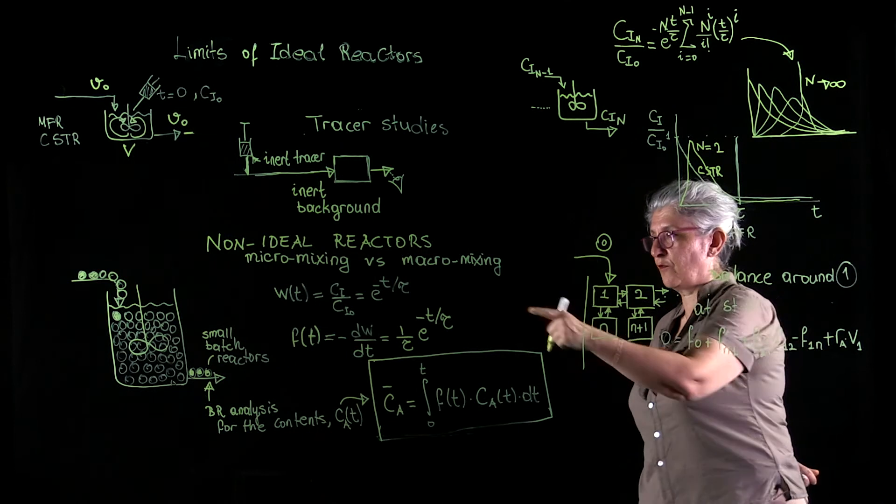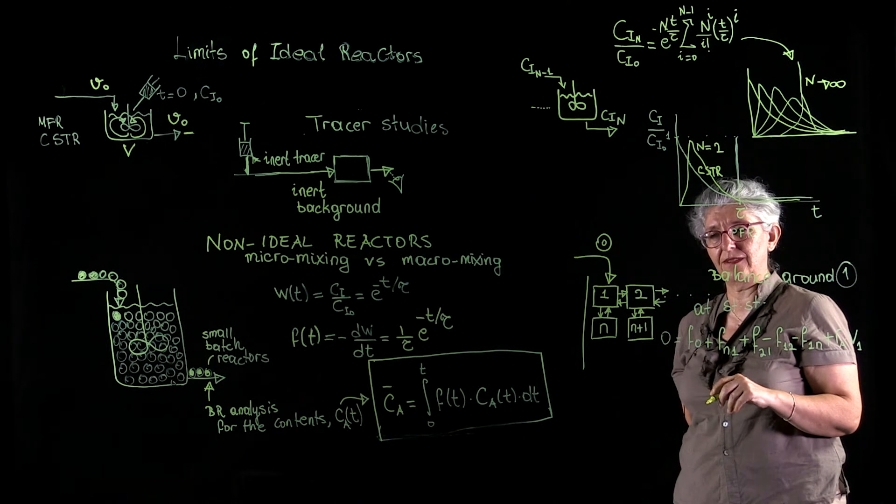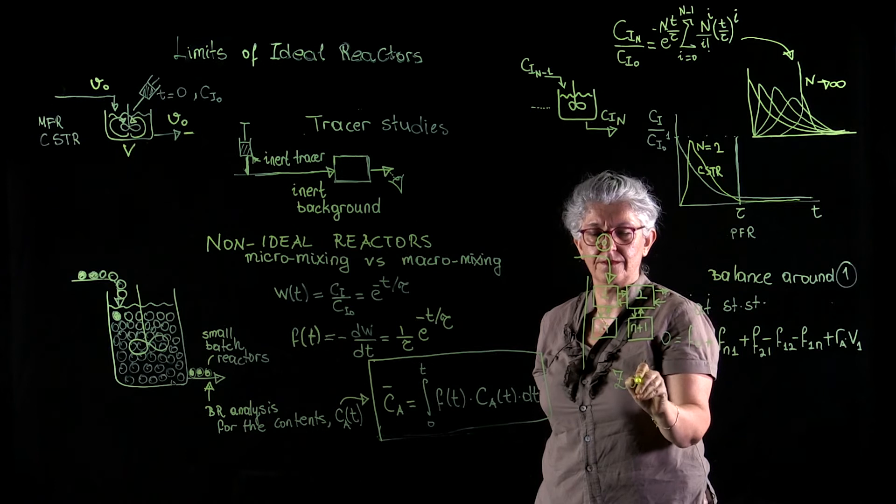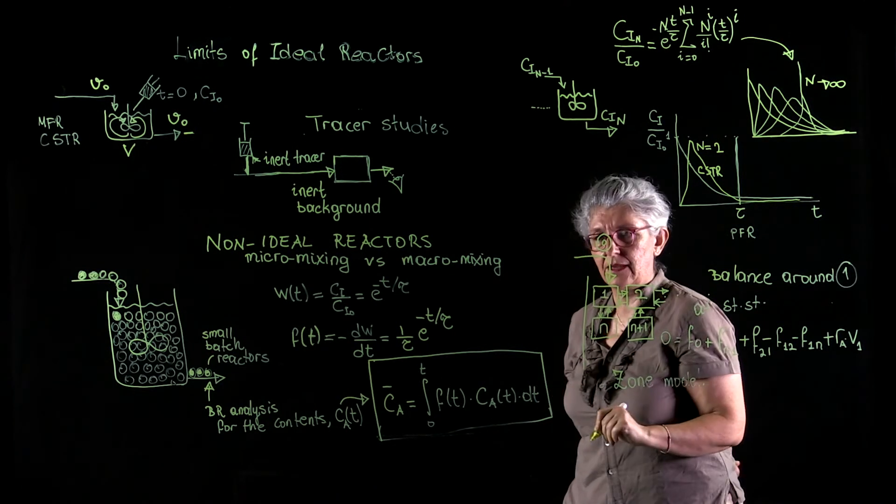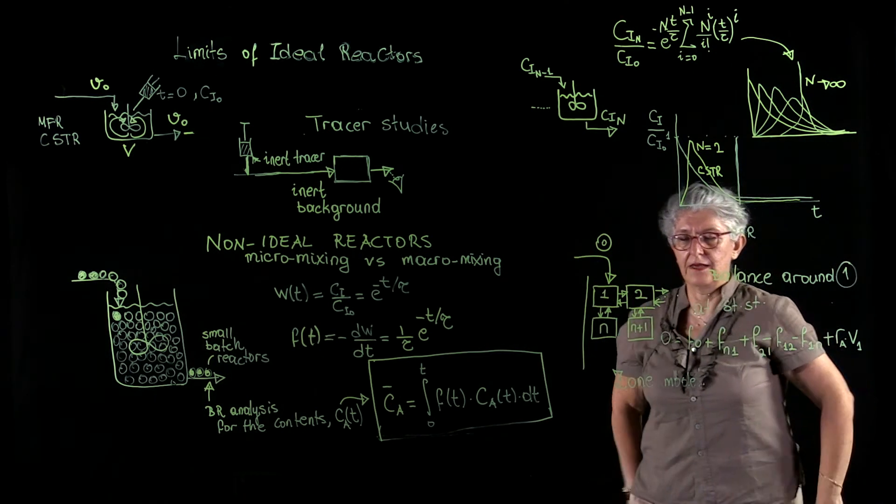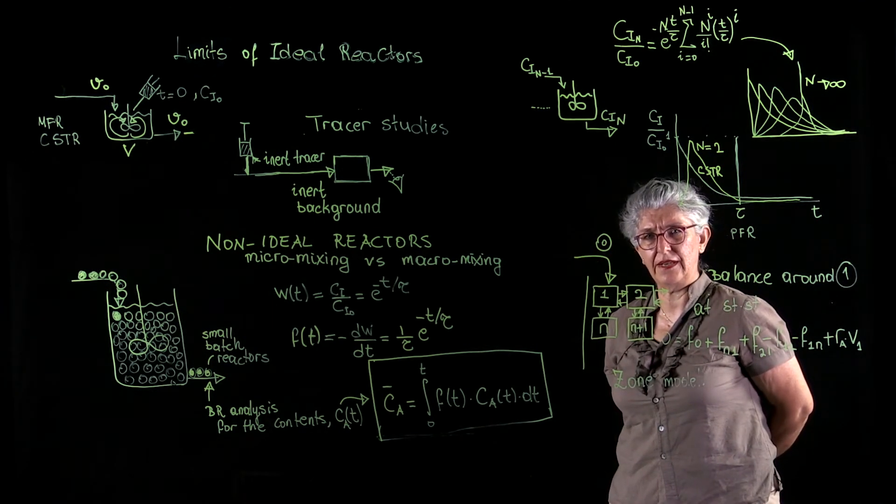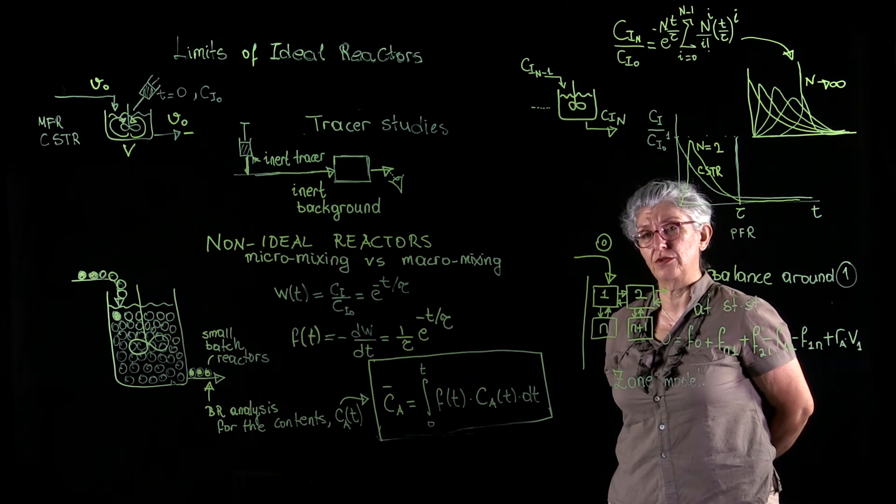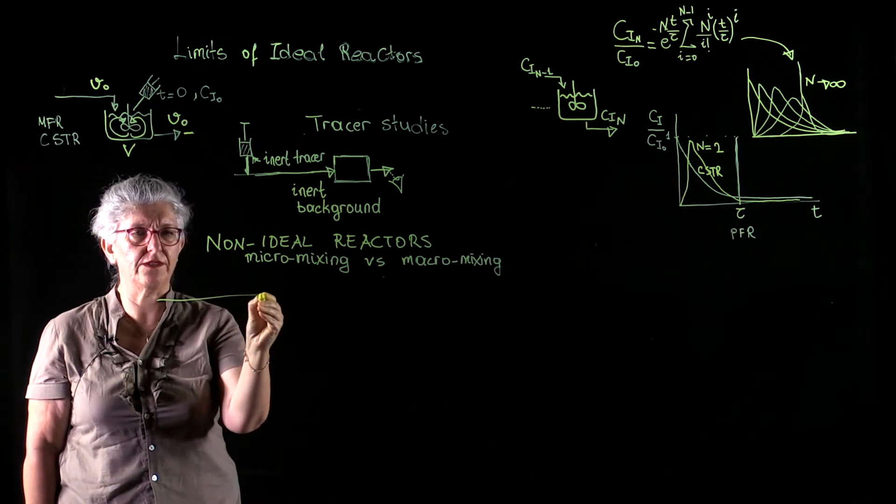And I have to write it for all the domains that I have identified within this reactor. And this is called the zone model. And if I have too many zones, of course, analytical treatment becomes impossible. And I have to use tools that are available to me, computational tools that are available to me.